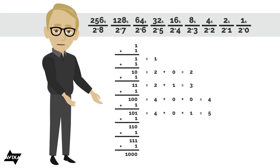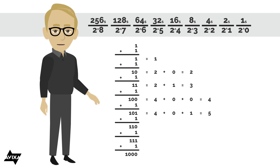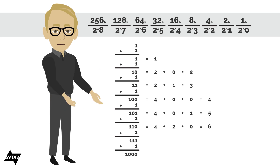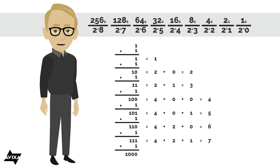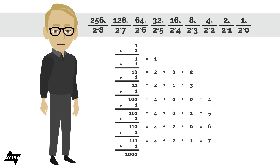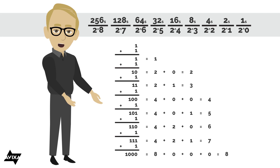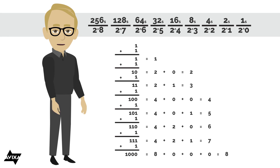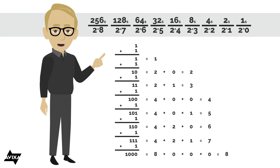For 1, 0, 1 — I have something in the 4's place, nothing in the 2's place, something in the 1's place. 4 plus 0 plus 1 is 5. For 1, 1, 0 — I have something in the 4's place, something in the 2's place, nothing in the 1's place. 4 plus 2 plus 0 is 6. For 1, 1, 1 — I have something in the 4's place, something in the 2's place, something in the 1's place. 4 plus 2 plus 1 would be 7. And finally, 1, 0, 0, 0 — I have something in the 8's place, nothing in the 4's, 2's, or 1's place. So 8 plus 0 plus 0 plus 0 gives me a total of 8.